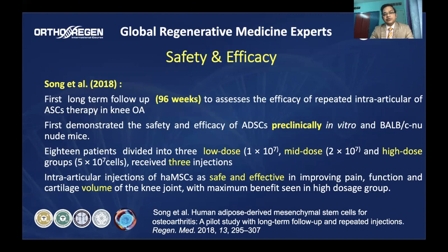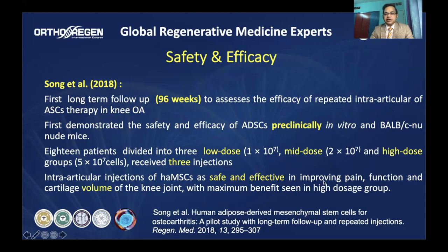For long-term follow-up, a case study by Song et al. in 2018 provided the first long-term follow-up of 96 weeks. They used intra-articular injection for osteoarthritis — first pre-clinically in mice, then in 18 patients divided into three doses: low dose (1 billion cells), mid-dose (2 billion), and high dose (5 billion). They found that human adipose-derived mesenchymal stem cells are safe and effective, reaching a similar conclusion to Julian.